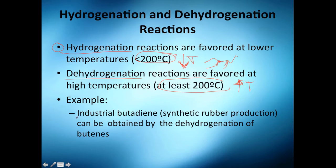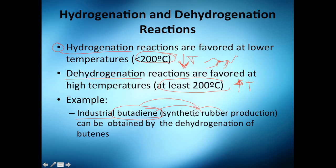One common industrial process is butadiene production, which is used for synthetic rubber production. You can obtain butadiene by the dehydrogenation of butanes — for example, n-butane, isobutane, and so on.